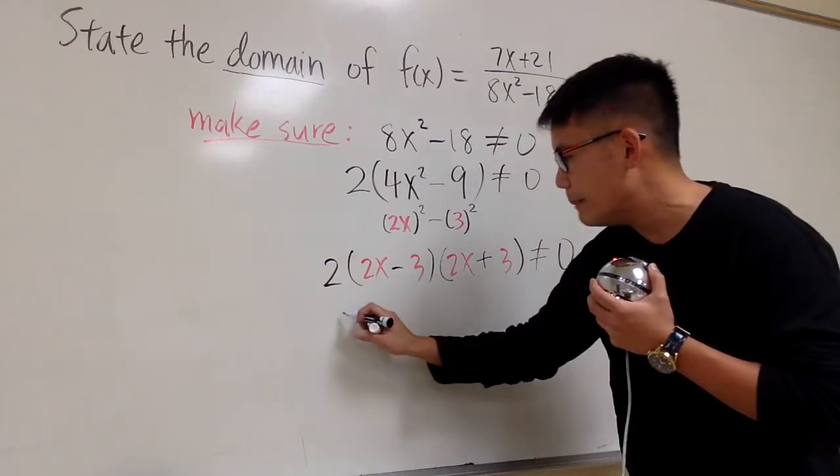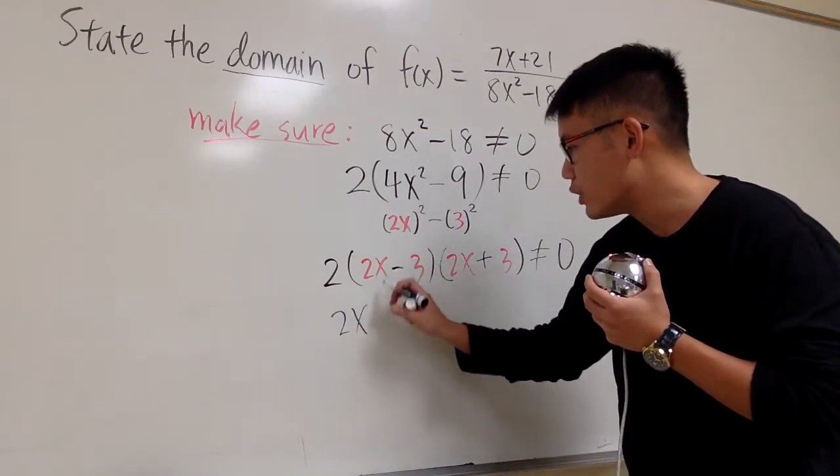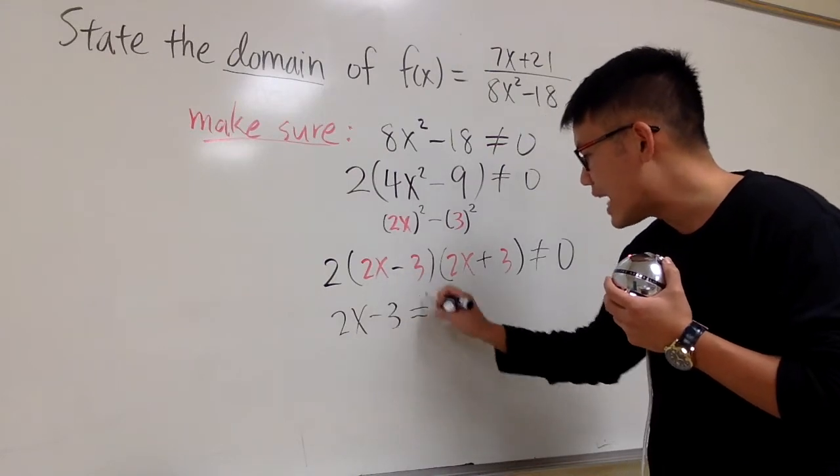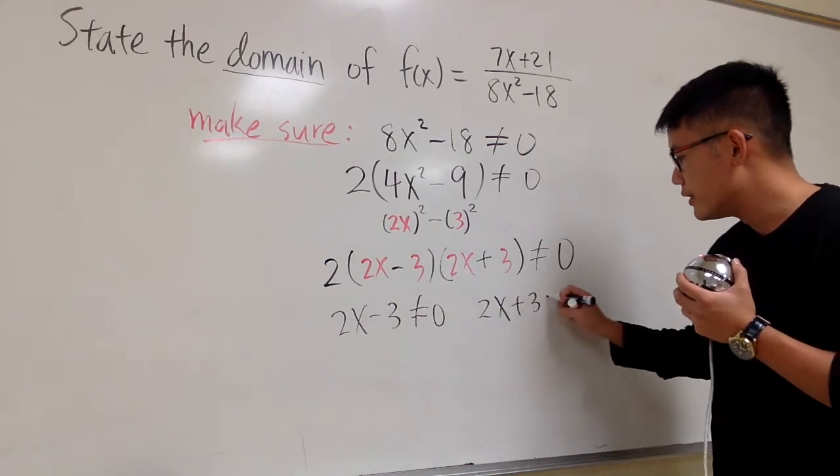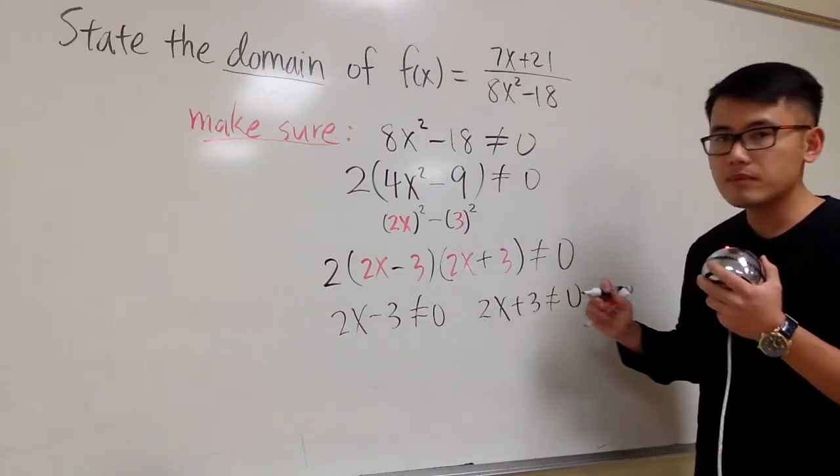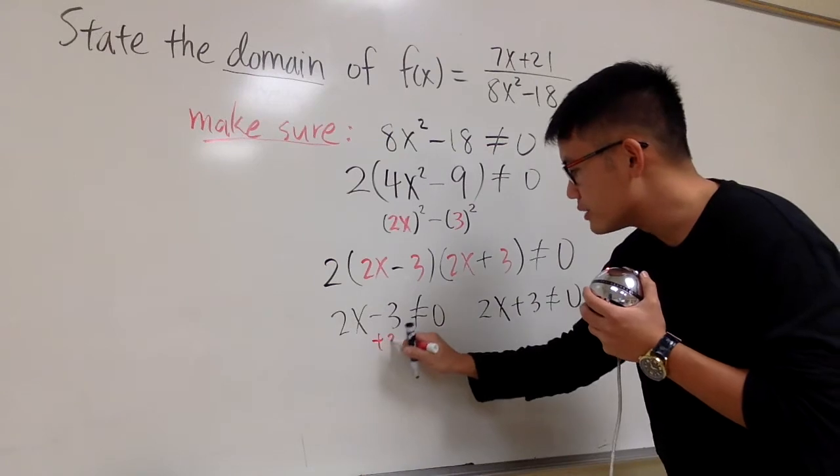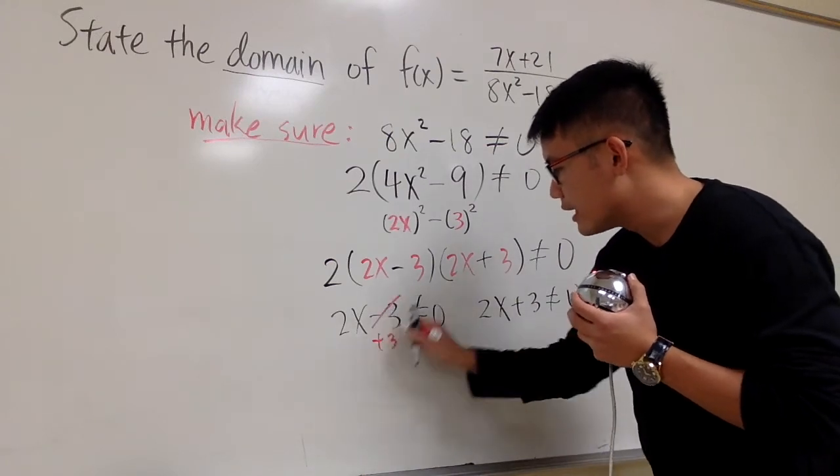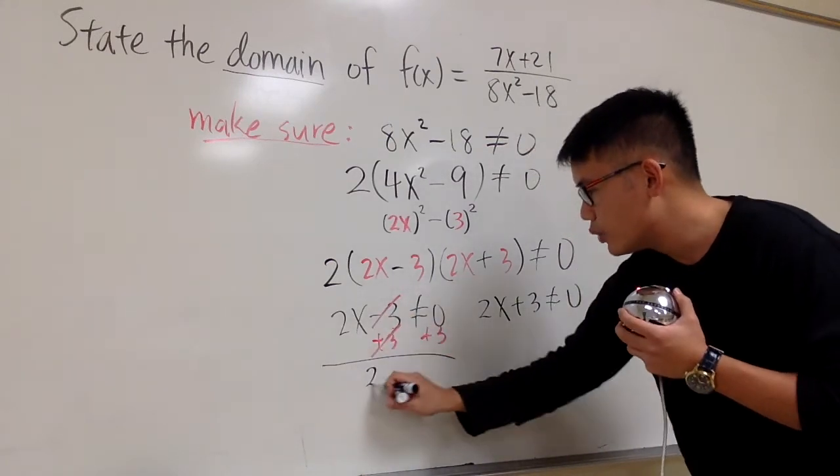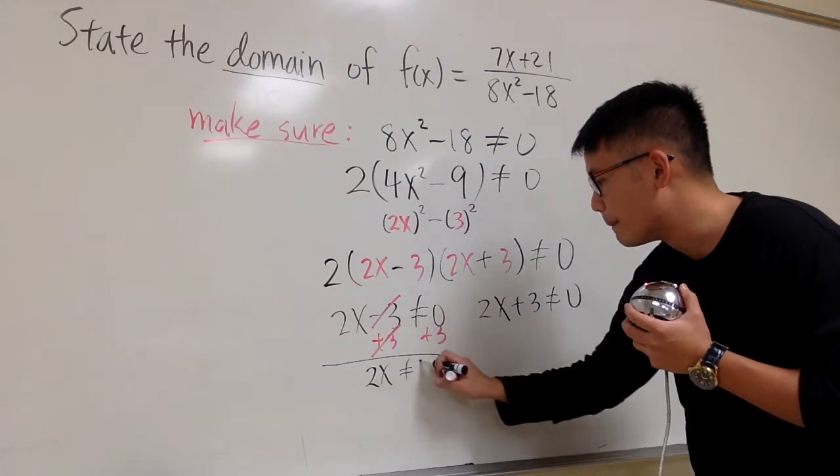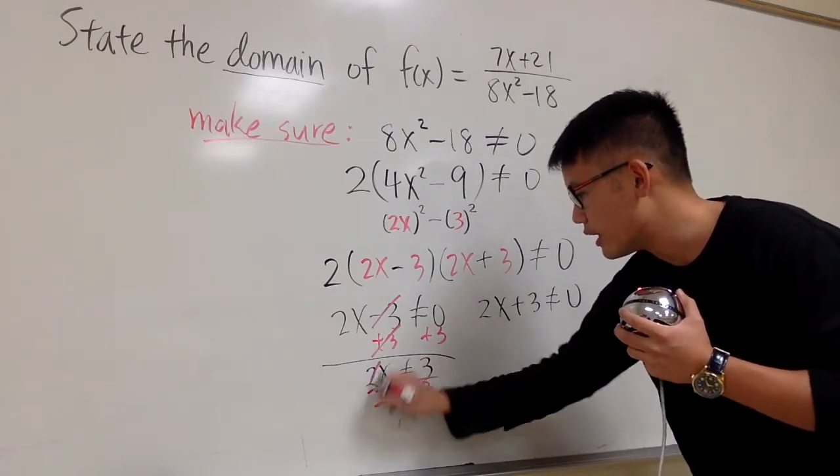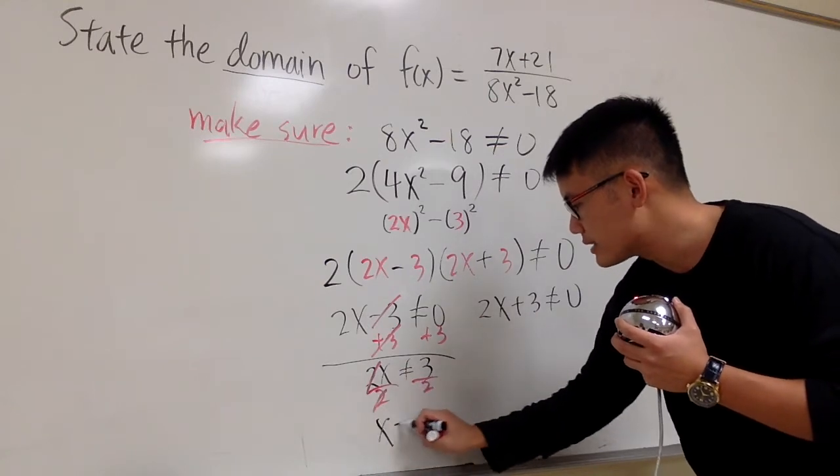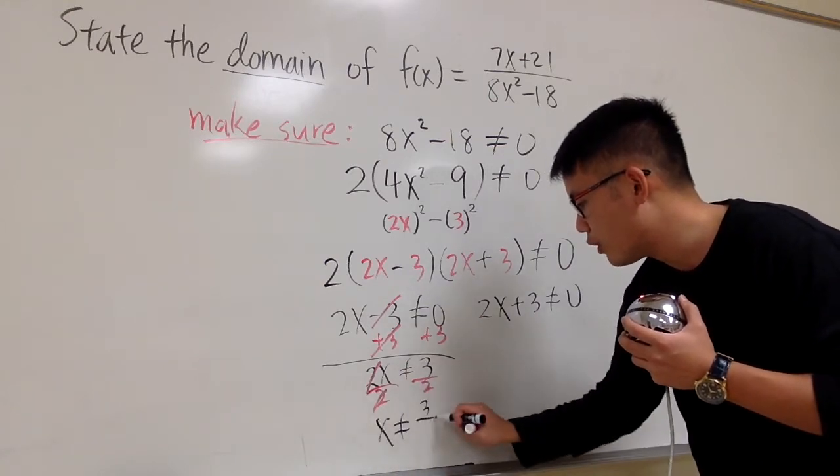So for this one, I'm going to put down, we need to make sure 2x - 3 is not equal to 0. And then, we also have to work this out. 2x + 3 is not equal to 0. Right here, through the usual business, we add 3 on both sides, cancel, cancel, and then 2x is not equal to positive 3. So that we end up with, after we divide both sides by 2, x cannot be 3 over 2.